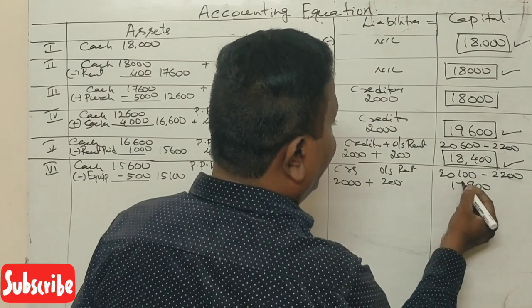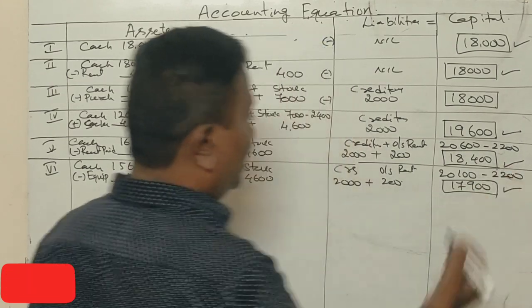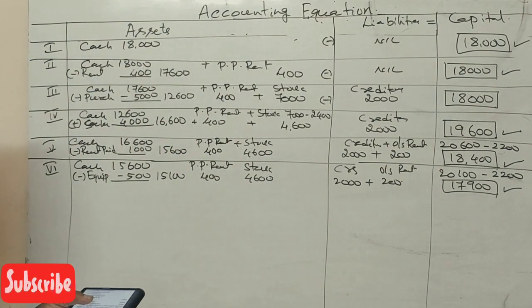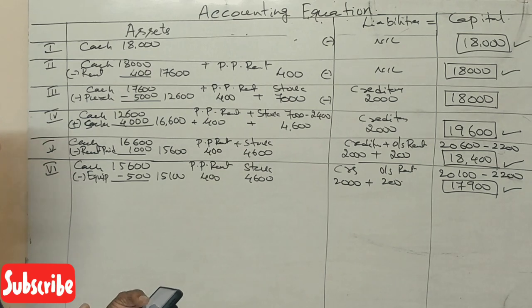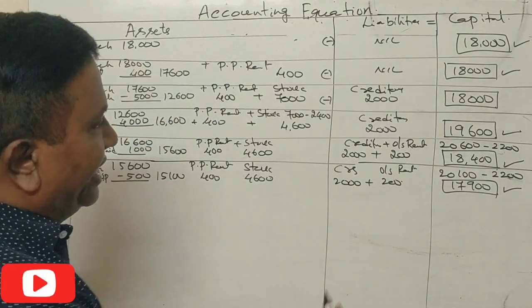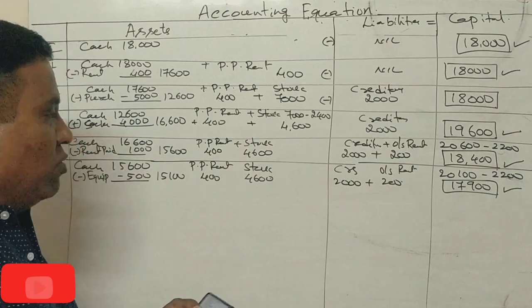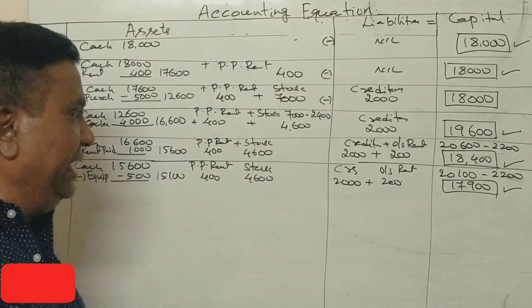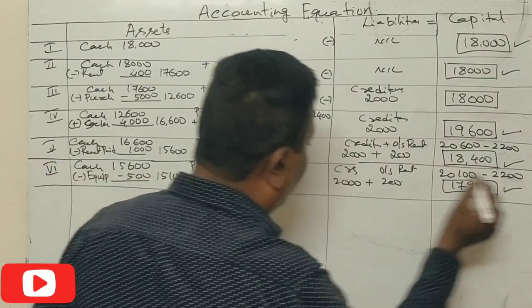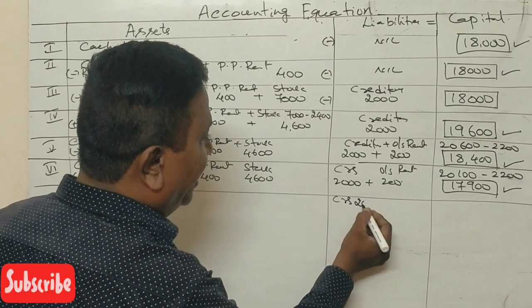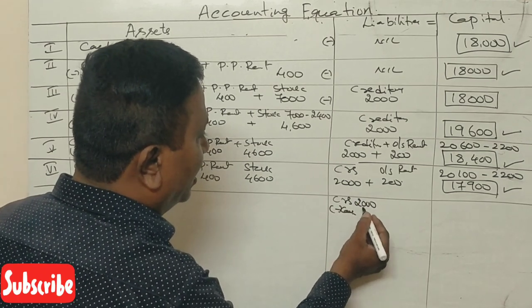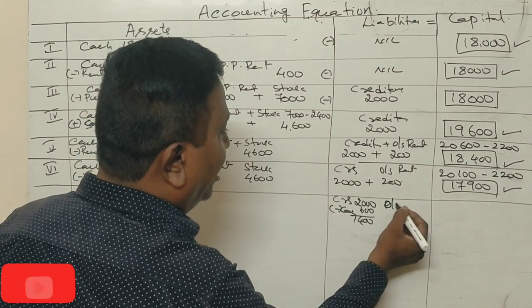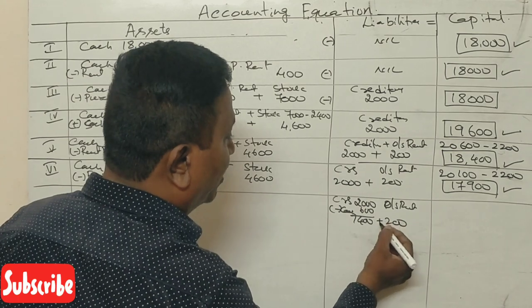Capital is ₹17,900 after this transaction. Next transaction: pay creditor ₹600. Cash is used to pay the creditor.